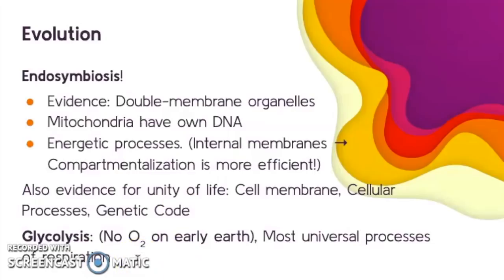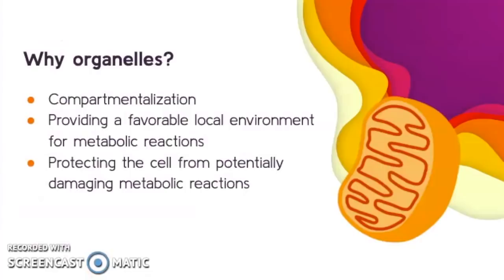Glycolysis, which is a conserved process, could have happened when there was no oxygen on earth because it is an anaerobic process and it is one of our most universal processes of respiration. Nearly all existing organisms perform glycolysis. Glycolysis occurs under anaerobic conditions and glycolysis occurs in the cytosol, so you don't need any organelles to do it. Why do organisms have organelles anyway? They're good for compartmentalization—increased efficiency. It provides a favorable local environment for metabolic reactions, and it protects the cell from potentially damaging metabolic reactions.